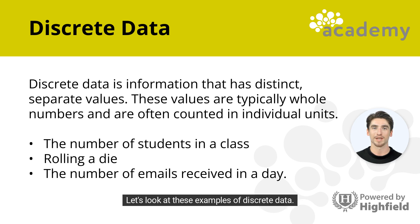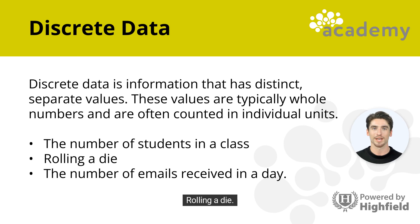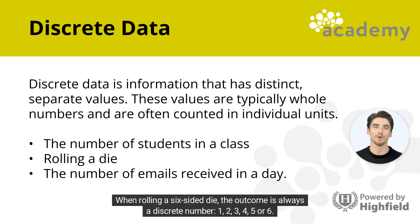Let's look at these examples of discrete data. The number of students in a class — you can count the exact number of students and you can't have a fraction of a student. Rolling a die: when rolling a six-sided die, the outcome is always a discrete number.